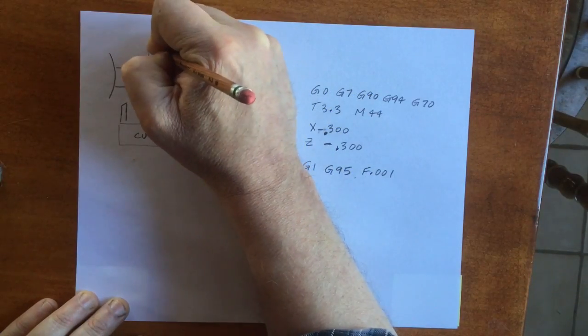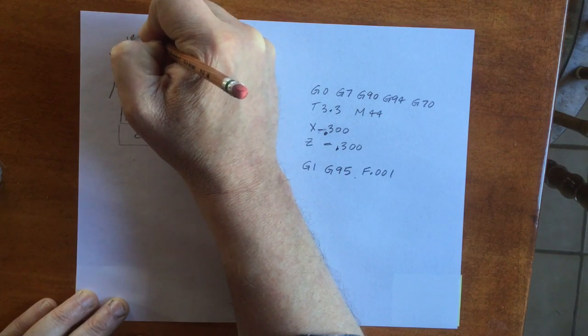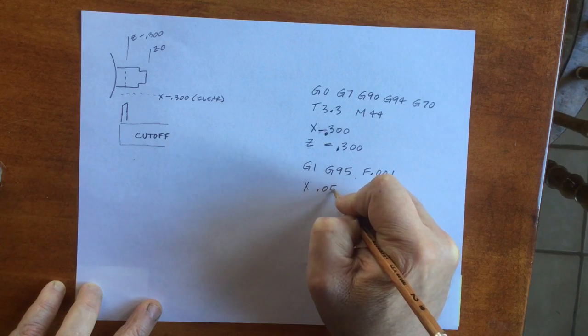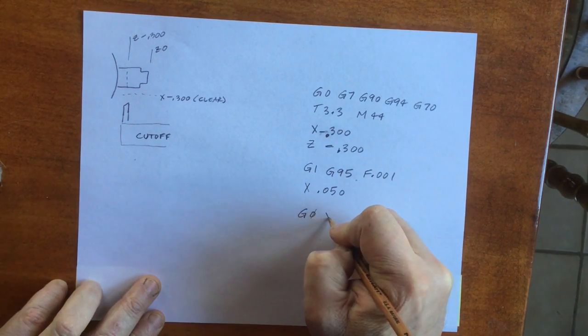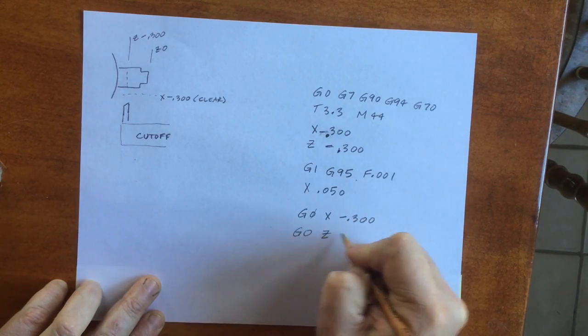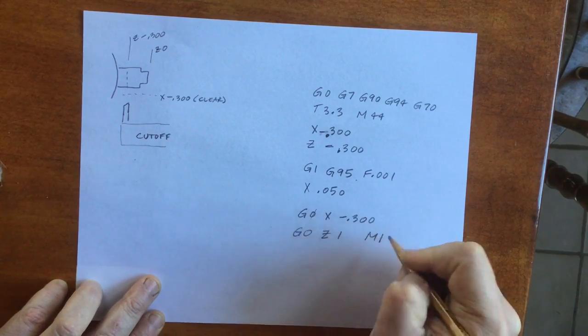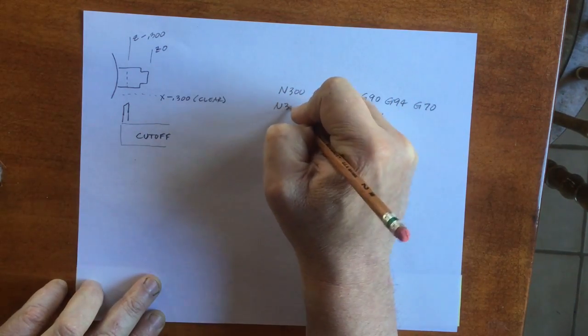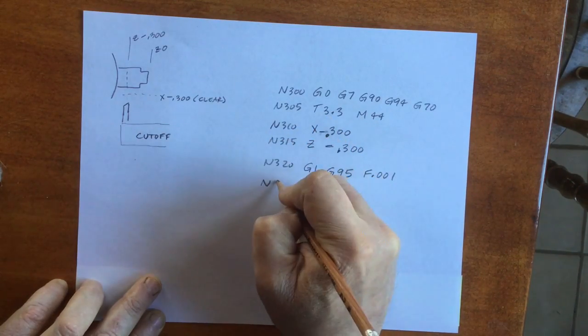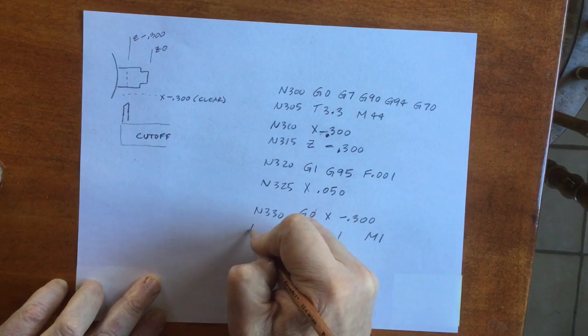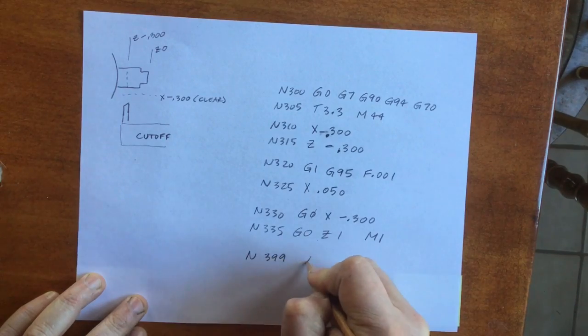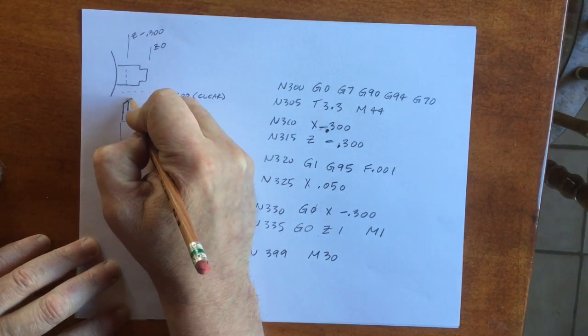Last is the cutoff tool. I'm going to identify some important points both in the X and Z direction. The toolpath is pretty simple. We're just going to cut to 50 thousandths beyond centerline. Next, rapid off the part in the X direction, then Z direction. Add M1 for the optional stop. Next, line numbers starting at N300 and incrementing by fives. At the end of the program, we put in M30, which means it's the end of the program and it's time to go back to the beginning.